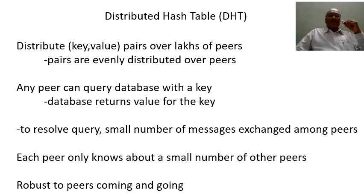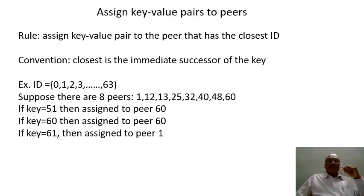This system is robust to peers coming and going — in a peer-to-peer network, a computer can join or leave the network. When a computer is inactive, you cannot obtain the value stored on it; when it is active, you can easily retrieve that data. The question is: how do we assign key-value pairs to peers?